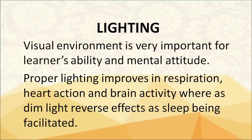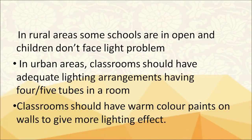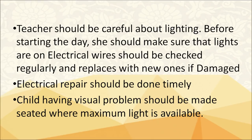Let's discuss lighting in schools. Visual environment is very important for learners' ability and mental attitude. Proper lighting improves respiration, heart action and brain activity, whereas dim light has reverse effects, facilitating sleep. In rural areas, some schools are in the open and children do not face light problems. In urban areas, classrooms should have adequate lighting with 4-5 tubes per room, and warm color paints on walls to give more lighting effect. Teachers should ensure lights are on before starting the day, electrical wires should be checked regularly and replaced if damaged, and children with visual problems should be seated where maximum light is available.